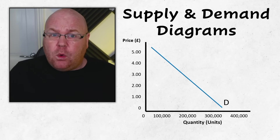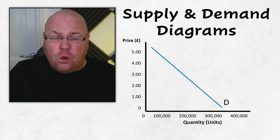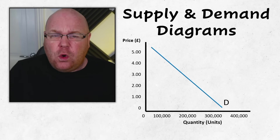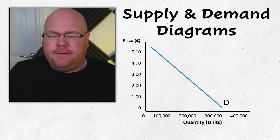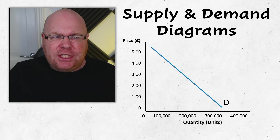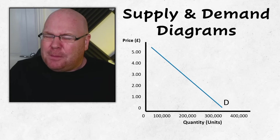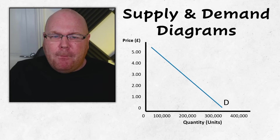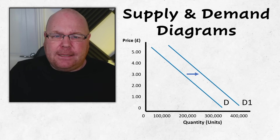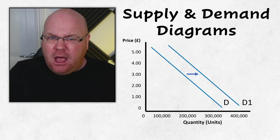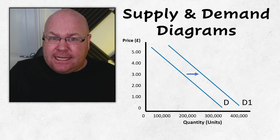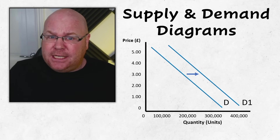In examinations we might be required to draw movements in the demand curve to secure marks. What causes the demand curve to shift is a change in circumstances in the market that might affect consumers. For example, if even though the price of a particular good doesn't change more people are now willing to purchase it, this would lead to a shift outwards or to the right of the demand curve — illustrating that at the same price more consumers would now be willing to purchase that product.